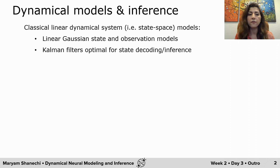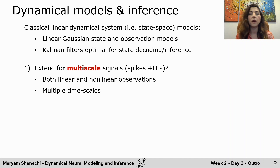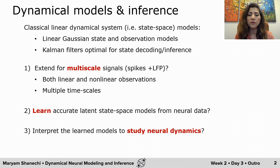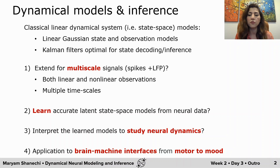I will talk about four main topics. First, how can we extend these dynamical models and Kalman filters for multi-scale signals consisting of spiking activity, local field potentials, and ECoG, which could therefore also have nonlinear observation equations as well as multiple timescales. Second, how we can learn accurate latent state space models to describe a given neural data set. Then we'll talk about interpretation — how do you interpret these models and use them to study neural dynamics? And finally, applications to brain-machine interfaces for various brain states from motor to mood.